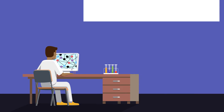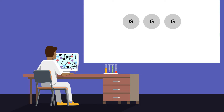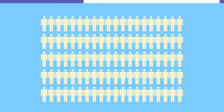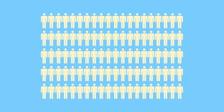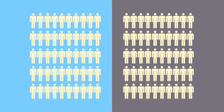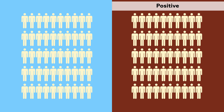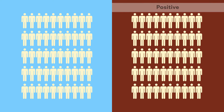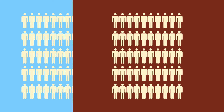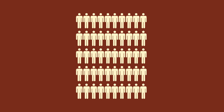The simplest algorithm has just two stages: non-overlapping pools of specimens are tested, and then all people in each positive pool are retested. For example, if 100 specimens are divided into two groups and one group tested positive, all 50 specimens in that group would be retested. Although that's a lot less testing than if pooling hadn't been done, the researchers argue there's still room for improvement.